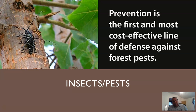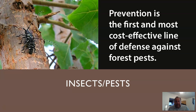One of the big things to always remember when talking about forest pests is that prevention is the first and most cost-effective line of defense against forest pests. The idea is that if you can stop the problem before it happens, that's really the most important thing. You want it to where you don't have a problem to begin with.